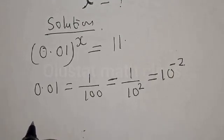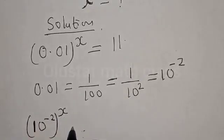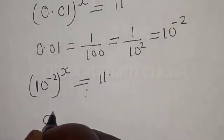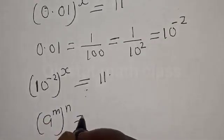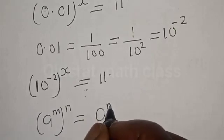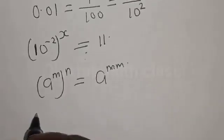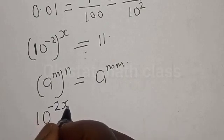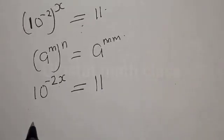Then we have 10 raised to the power of minus 2, raised to the power of s, is equal to 11. This equation becomes 10 raised to the power of minus 2s is equal to 11. Let's take the log of both sides.